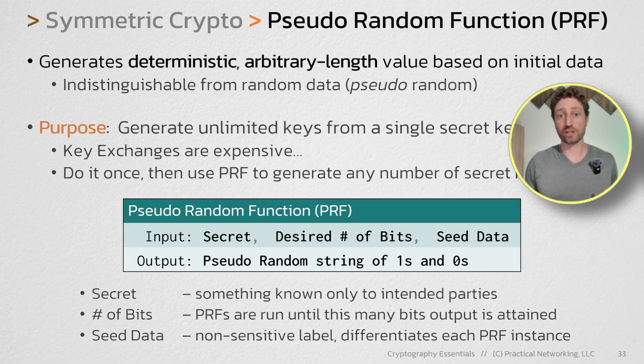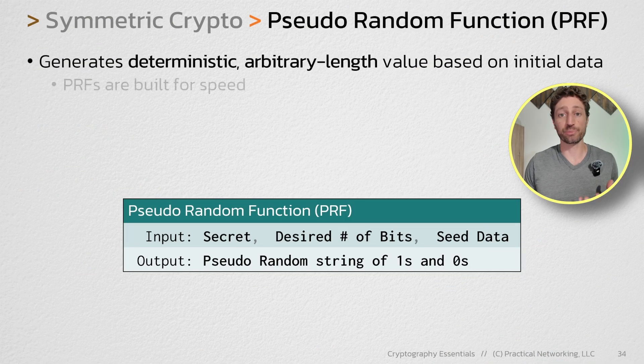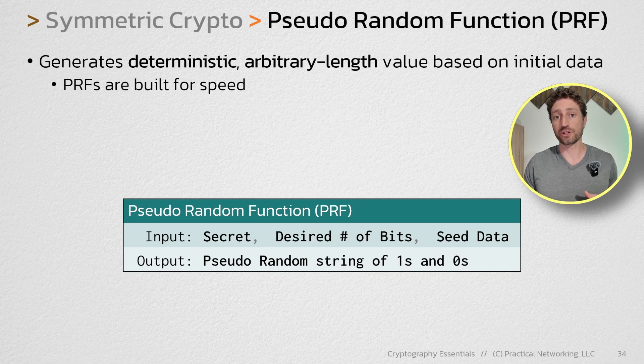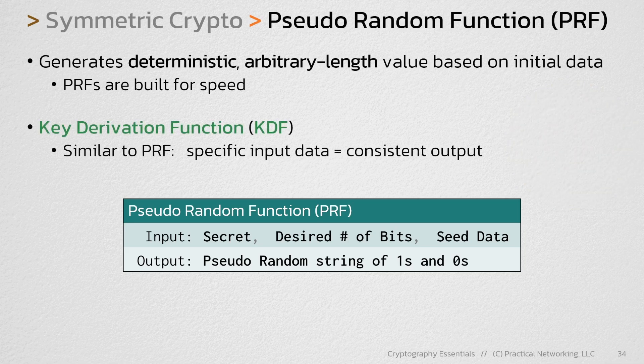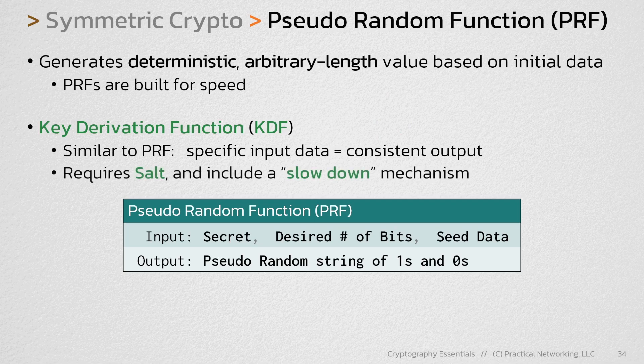So that's the general idea behind a PRF — you can use it to take one secret key and turn it into any amount of keys that you want. But there's something related to a PRF that I would actually categorize as a type of PRF: it's like a PRF but more secure. Just like hashing algorithms, PRFs are built for speed. But there is something similar to a PRF that is not, and that something is known as a KDF. A KDF is similar to a PRF in that specific input data is always going to produce the same consistent output, but it's different because a KDF also requires salt and a slowdown mechanism.